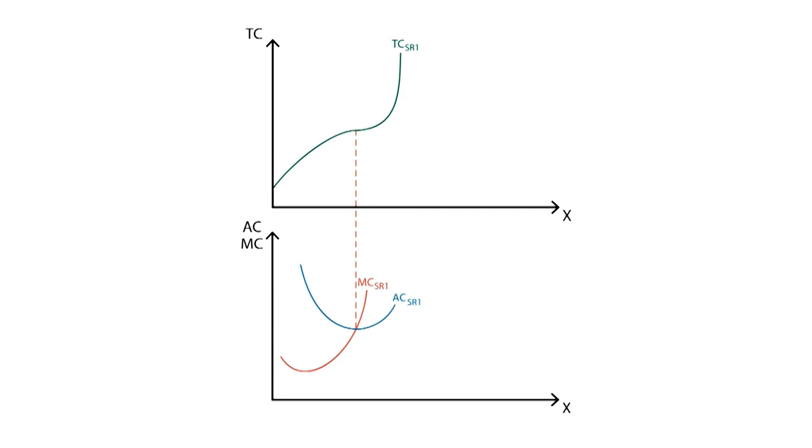Since the long-run is formed by a set of many different short-run periods that come one after the other, we'll draw other short-run curves. Thus, we draw the total cost curve, the average cost curve, and the marginal cost curve for period 2.